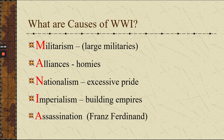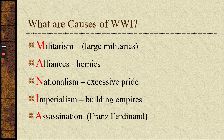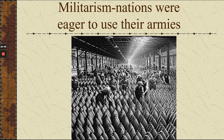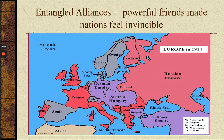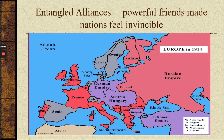What are the causes of World War I? Think of the word MANIA: Militarism, Alliances, Nationalism, Imperialism, and the Assassination of Archduke Franz Ferdinand. Militarism — everyone had weapons and was eager to use them. Entangled alliances — it's like if a friend gets in a fight and you feel bound to fight with him even though you think he's being a dumbass. France fought because Russia got involved, Germany fought because Austria got involved — everybody fought because somebody else got involved.